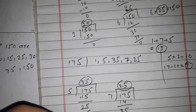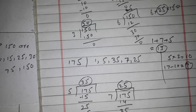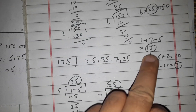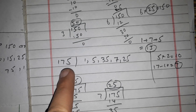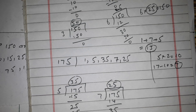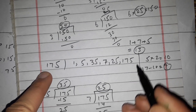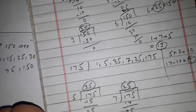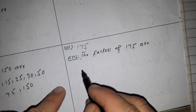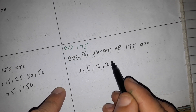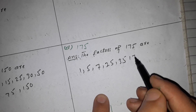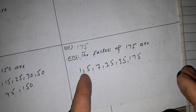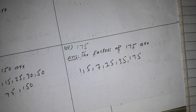Checking 8, 9, 10, 11, 12: 8 does not divide, 9 does not divide, checking further. The factors found are 12, 15, 25, 35. So the factors of 175 are 1, 5, 7, 25, 35, and 175. If you get it, you will get it — to the end of the video.